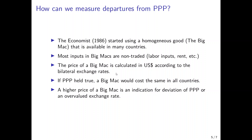If the price of a Big Mac is higher in one economy and lower in another, this is a deviation from purchasing power parity. The currency of the country where the Big Mac is more expensive would be overvalued in real terms, while the currency of the country where it is cheap would be undervalued in real terms.